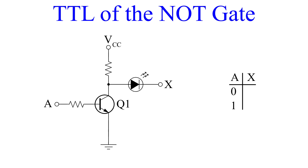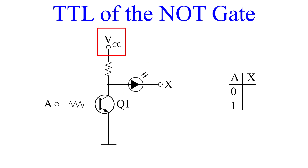The first schematic we see here is the inverter. In all of these schematics, we will see an LED on the output to indicate when the gate is in an active state. The VCC is the bias voltage, and A is the input signal.